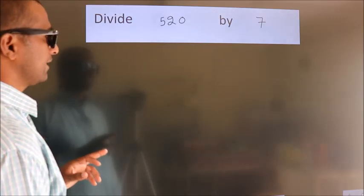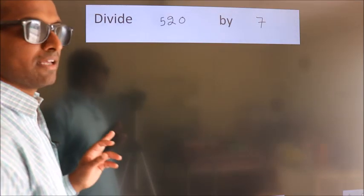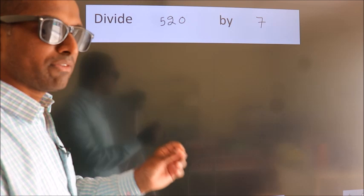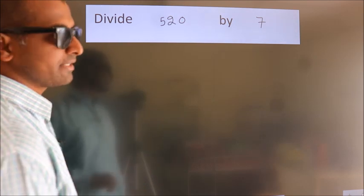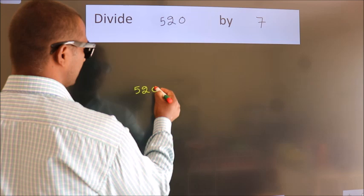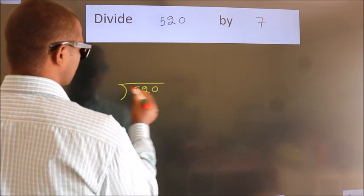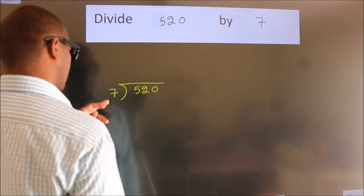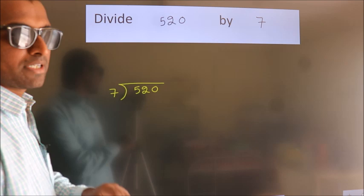Divide 520 by 7. To do this division we should frame it in this way. 520 here, 7 here. This is your step 1.